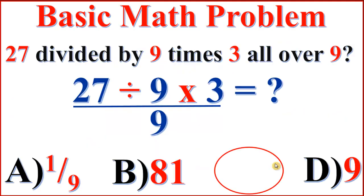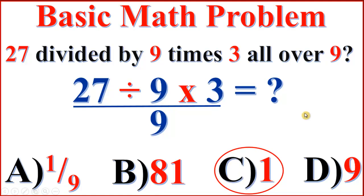Therefore, 9 divided by 9 equals 1. So this basic maths problem — 27 divided by 9, times 3, all over 9 — the answer is 1. Thank you.